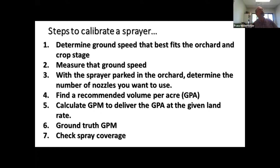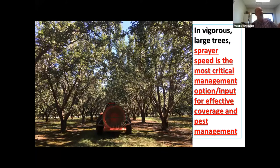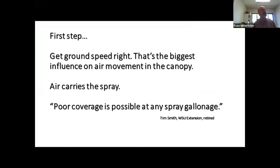In vigorous large trees, sprayer speed is the most critical management input for effective coverage and pest management. You can do all the others properly, but if the tractor speed is too fast, the fan air carrying the pesticide won't reach all parts of the tree and those parts aren't protected. The fan's ability to reach throughout the tree depends on the speed at which the sprayer passes each tree — giving the fan time to work in that canopy. Ground speed is the first and most important factor to get right; it's the one you've got to get right to make everything else work.